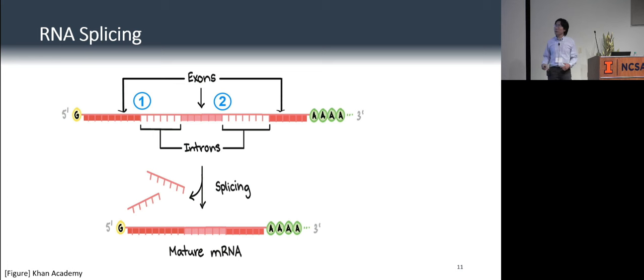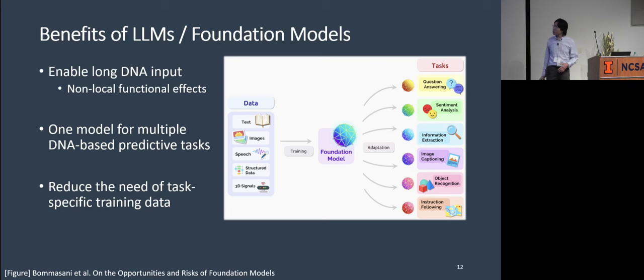Another topic is called RNA splicing. So when the DNA is transcribed into RNA, there are regions that will be kept in the mature mRNA. And there are regions that will be chopped off. And the task here is to, just by looking at the sequences, determine which regions will be chopped off. And those regions are called the introns.